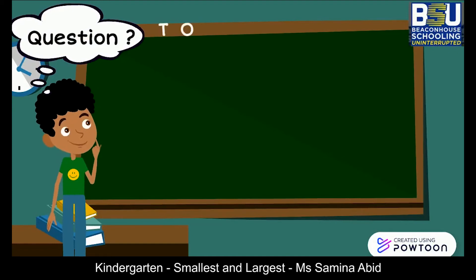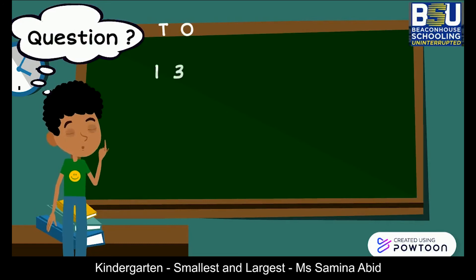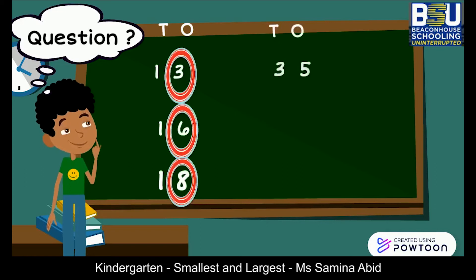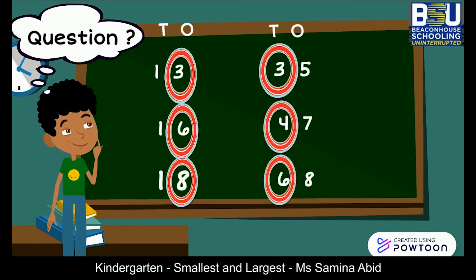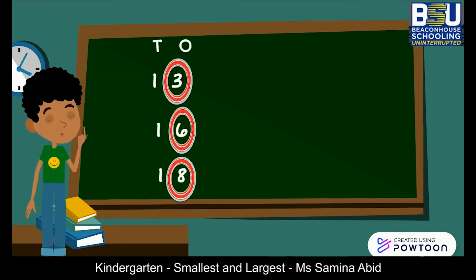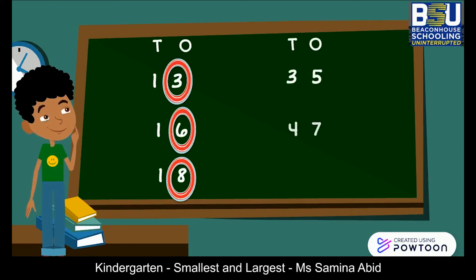Peter has a question: why did you look at ones when arranging 13, 16, and 18, but look at tens for 35, 47, and 68? When we arrange numbers from the same family in ascending or descending order, we look at the ones. On the other hand, for numbers from different families, we keep the value of tens in mind.